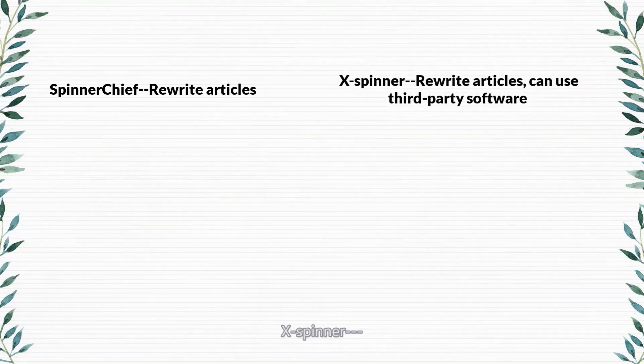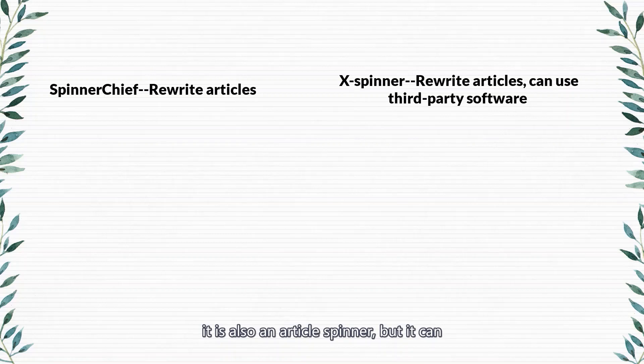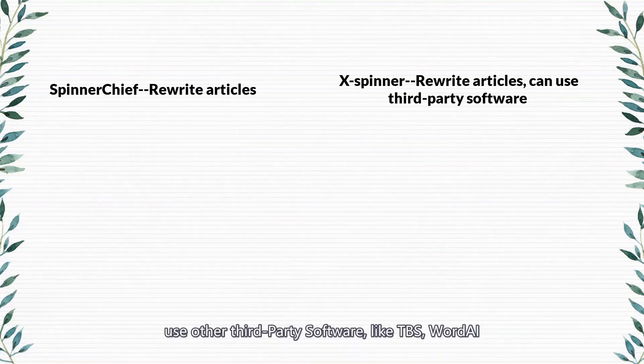X Spinner is also an article spinner, but it can use other third-party software, like TBS and Word AI.